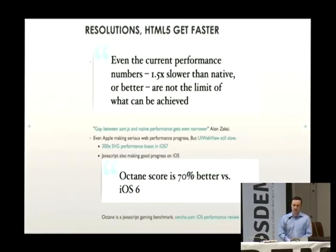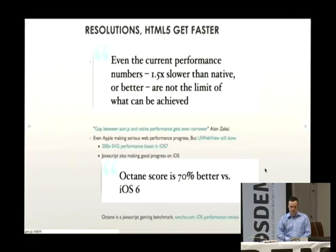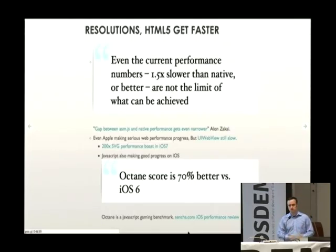Even Apple is making serious progress on WebView, at least in their Safari browser. We've seen a full 70% boost in some benchmarks between iOS 6 and iOS 7, up to four times faster in some gaming benchmarks like Octane.js. They fixed SVG rendering, getting a 200x improvement — or basically it works now. However, a lot of Apple's improvements don't directly make their way into the WebView or embedded WebView, which is necessary for App Store packaging.